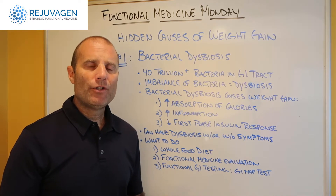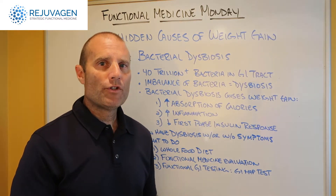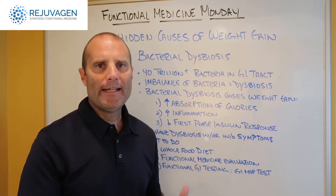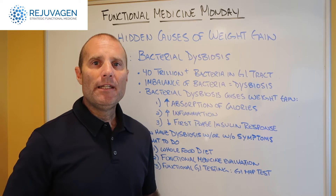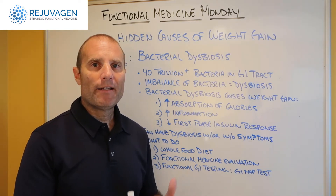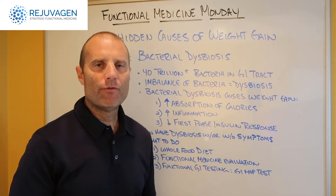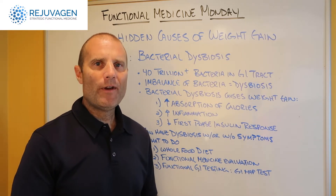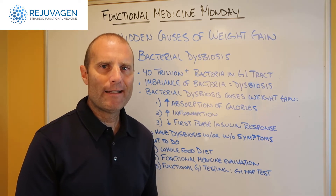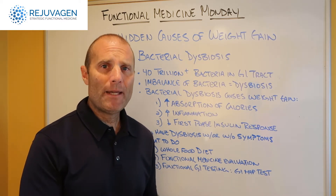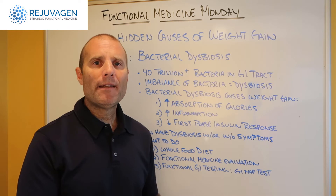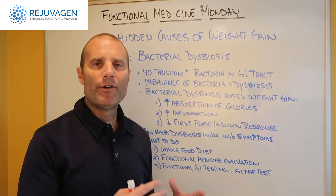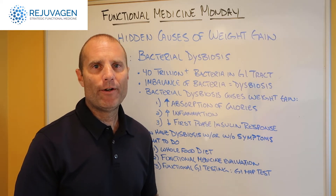The third thing you can do — typically through your functional medicine practitioner — is get a functional GI test done to assess the function of the GI tract. It'll look at whether you have bacterial imbalance, yeast overgrowth, or parasitic overgrowth. It'll give us information on whether you have inappropriate biophysiology or pancreatic enzyme output, inflammation in the GI tract, a weakening of your secretory IgA system or your immune system in the GI tract, and whether you have something like gluten intolerance.